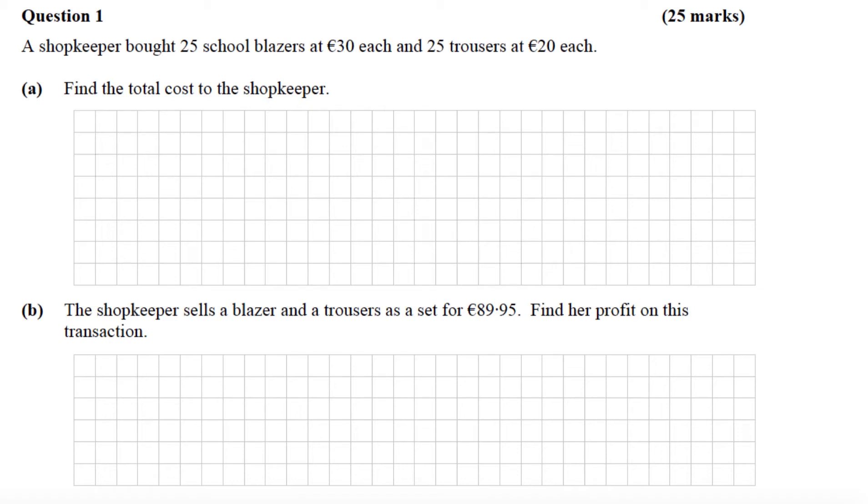This is the 2014 Leaving Cert Ordinary Level Paper 1, question number one. The shopkeeper bought 25 school blazers at 30 euro each and 25 trousers at 20 euro each. Find the total cost to the shopkeeper.